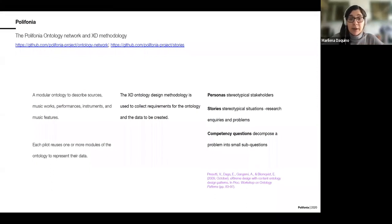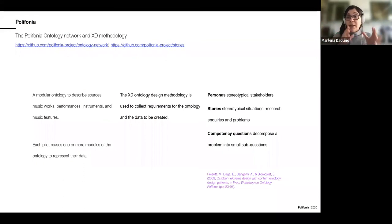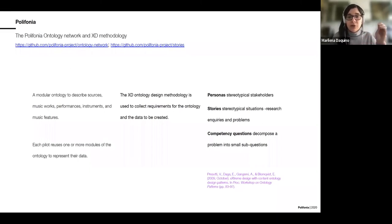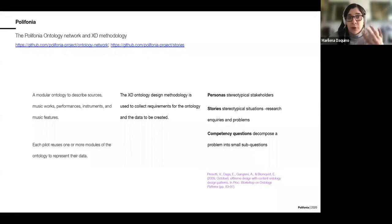Our idea is to create what is called a modular ontology: instead of one huge vocabulary, we have small chunks that define smaller problem spaces — an ontology dedicated to music works, another to performances, and so on — and every pilot picks definitions from this shared set. We call it an ontology network because it's modular, composed by several small ontologies.